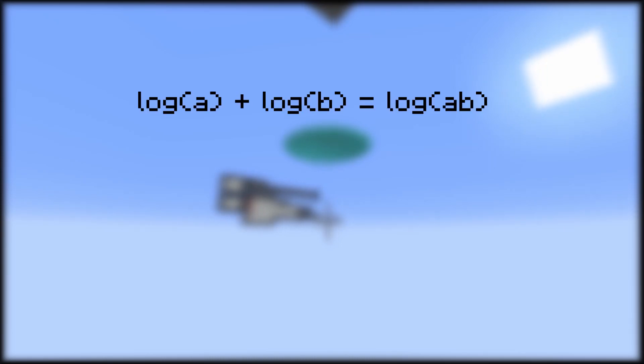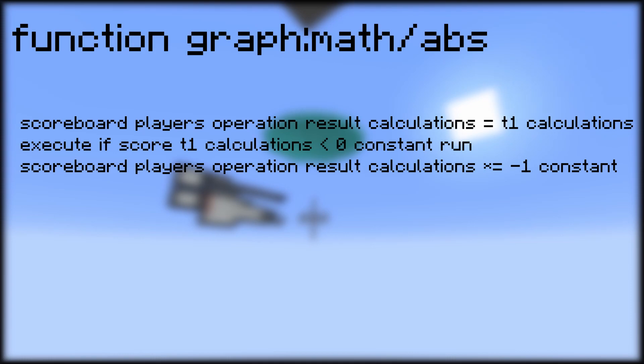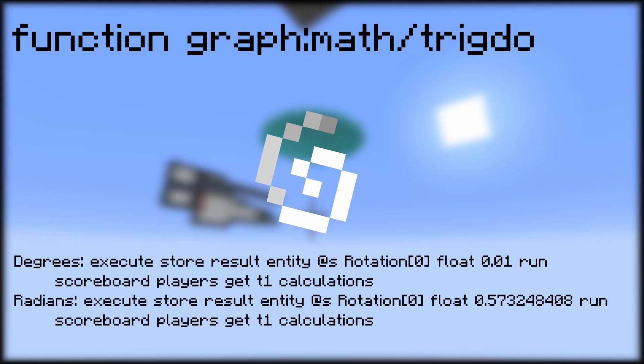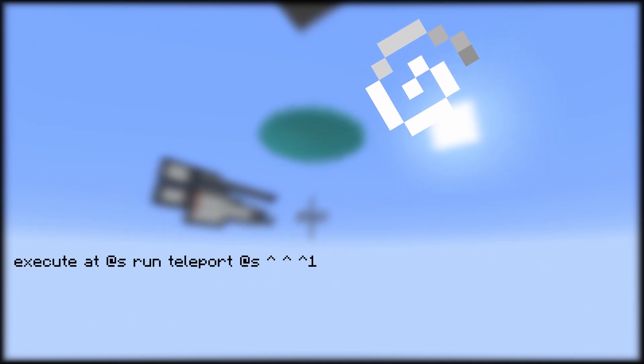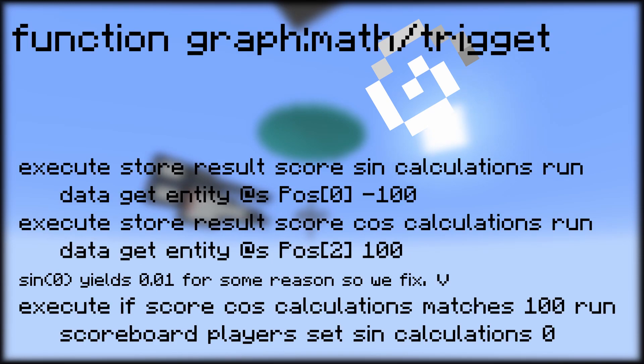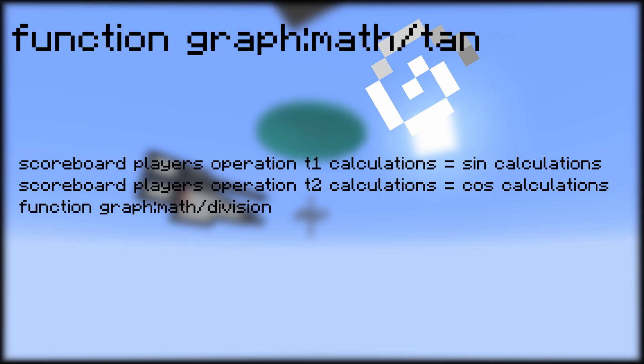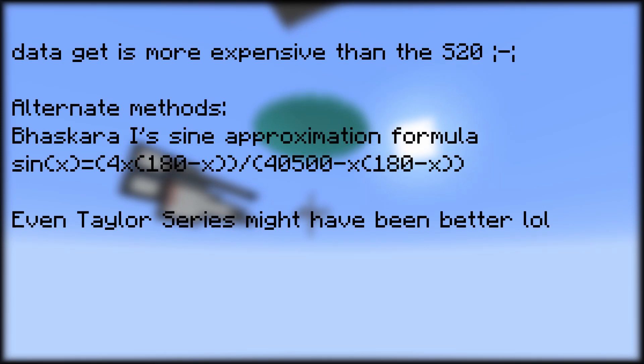Logarithms use a similar method, except it uses the property that log a plus log b equals log of a times b — I'll leave you to figure that one out. Roots just use the exponential function, using the property that the y-th root of x is just x to the power of 1 over y. I had initially used Newton's algorithm for finding roots, but found that the exponential function was way more accurate. Absolute value just checks if the number is negative and multiplies by negative 1. For trigonometric functions, an area effect cloud is spawned at 0, 0, rotated to match the given value, then teleported one block forward using /teleport @s, and the area effect cloud's X and Z values are grabbed for sine and cosine. For tangent, the sine value is simply divided by the cosine value. In hindsight, because data get is pretty expensive, I probably should have used a sine approximation formula instead.